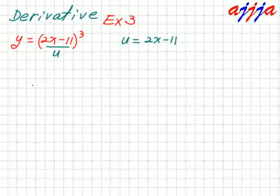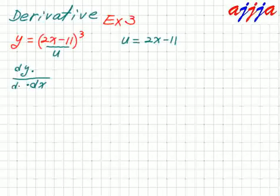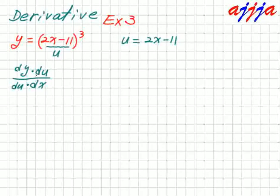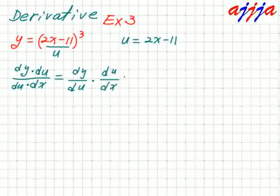Now, what about this? We are looking for dy over dx. The bottom and the top — we just multiply the same thing, like this: dy over du times du over dx.